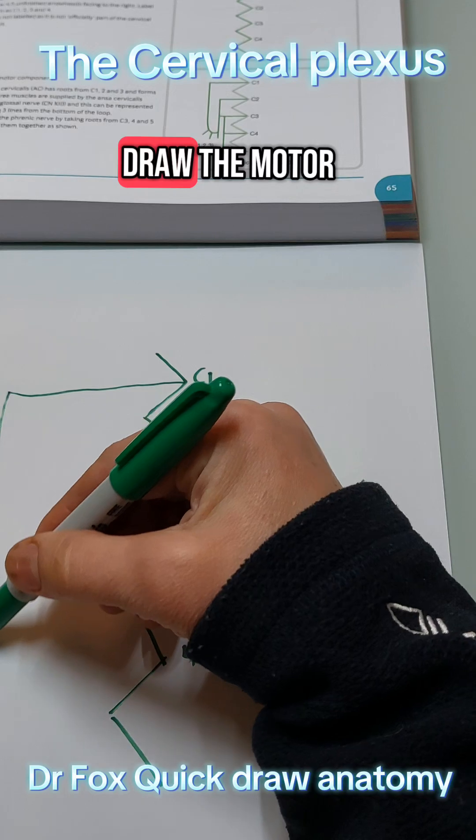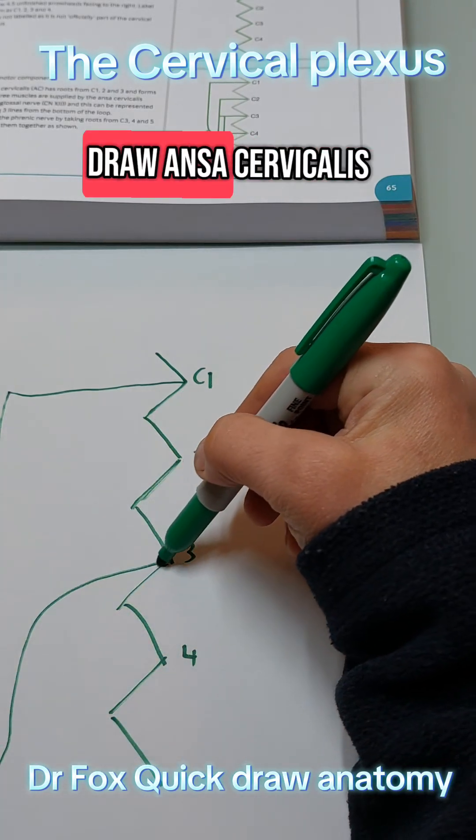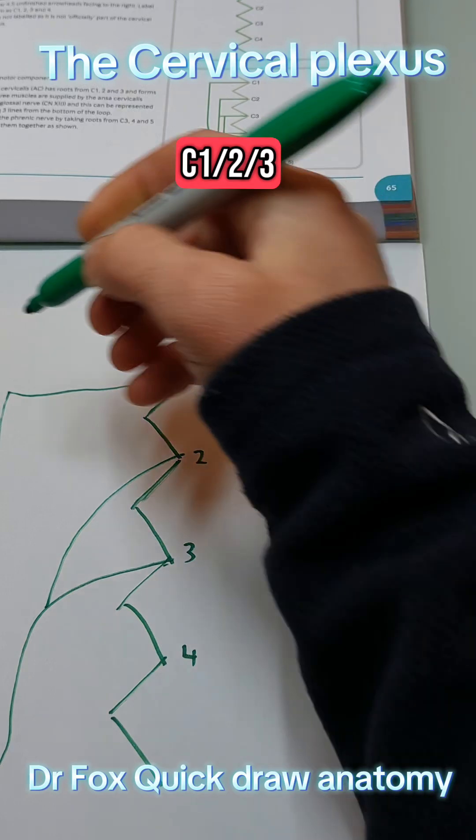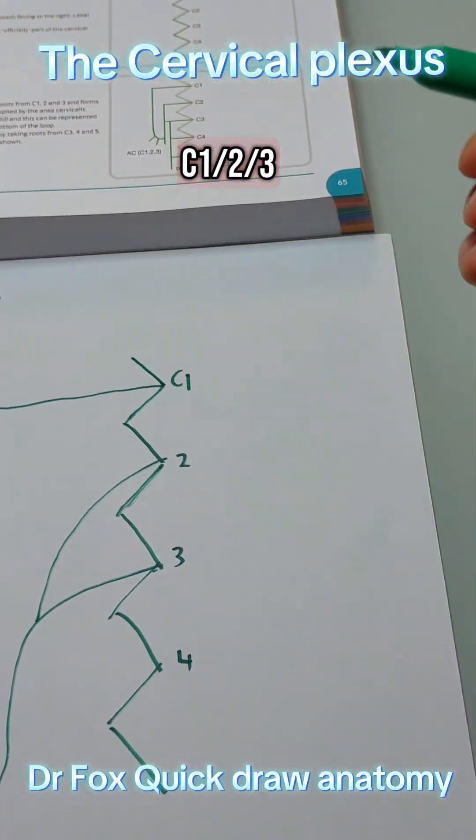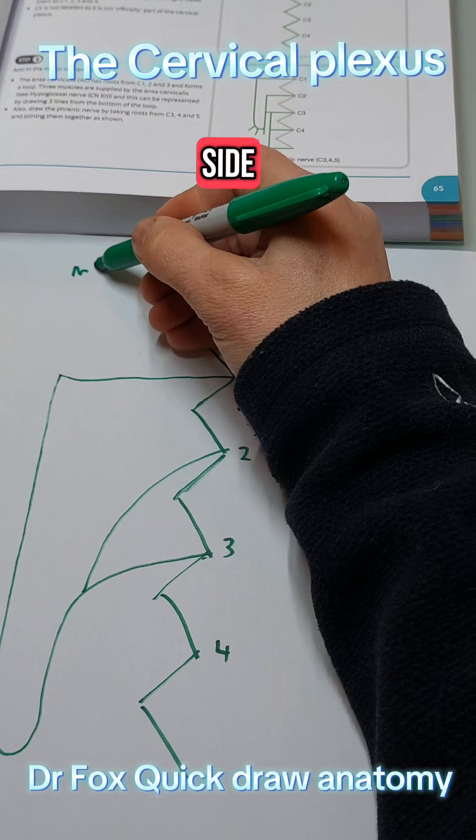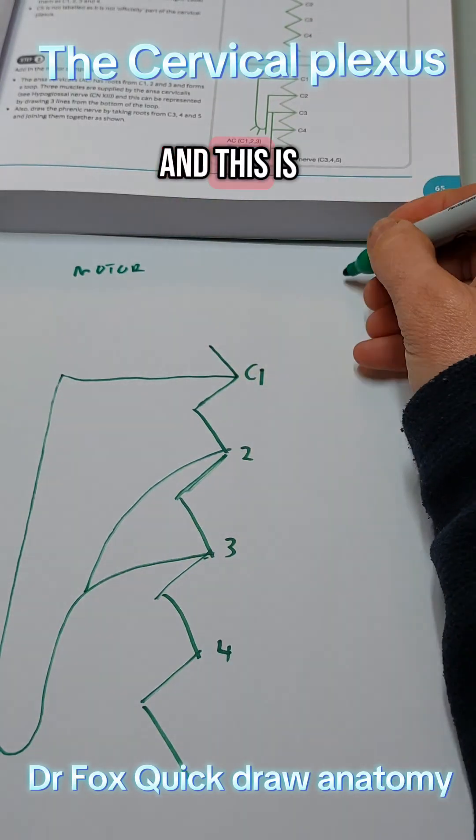So on the left we're going to draw the motor and first of all we're going to draw Ansa cervicalis. This is my motor side and this is sensory.